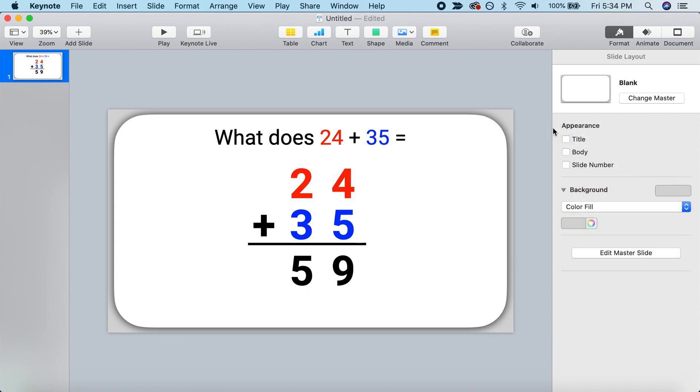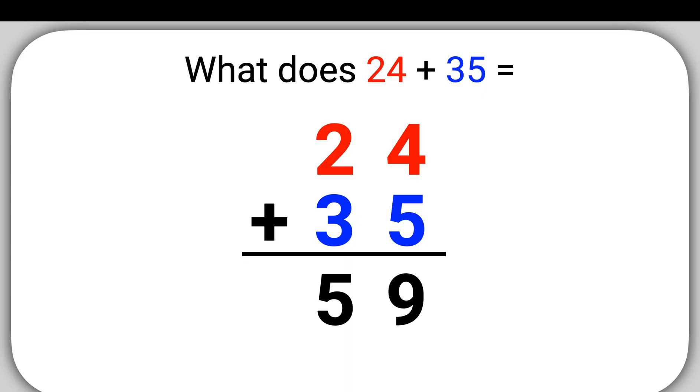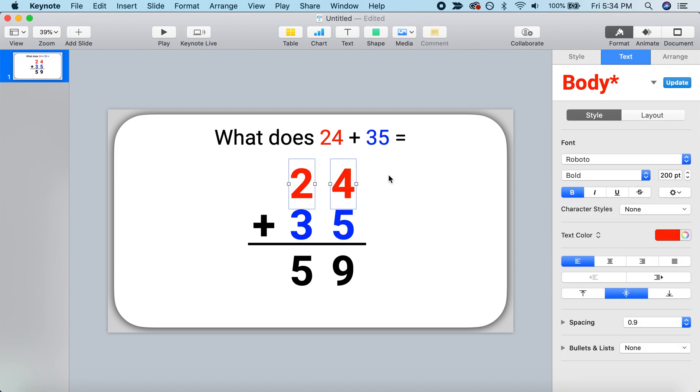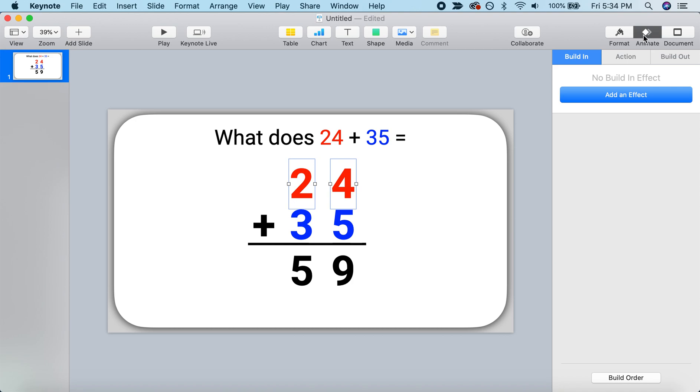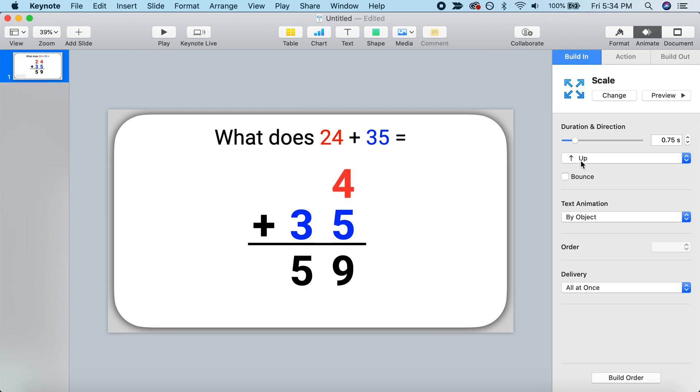All righty. So our problem is looking pretty good. But if we were to play through this, there is no movement on this slide. And so let's build the movement by animating this presentation. So the problem will appear. And then I want to show the students that I would write out 24 as if I were writing on a whiteboard. So I'm going to animate this and I'm going to build in 24. I'm going to make these appear with a scale animation. That's my favorite. And I like to build them in in 0.3 seconds with a little bounce.